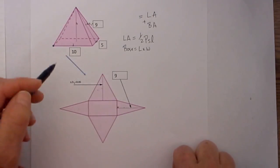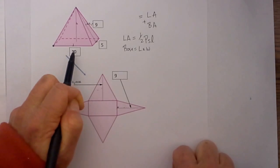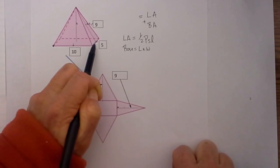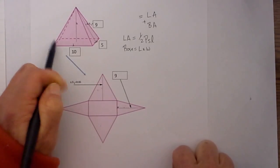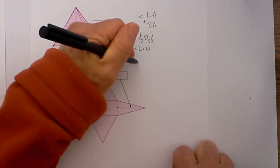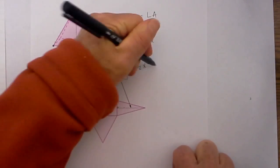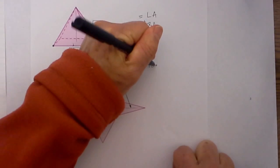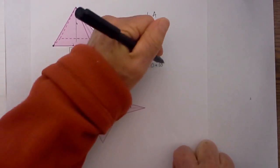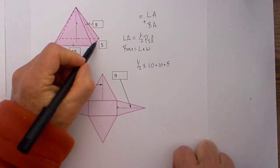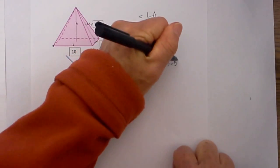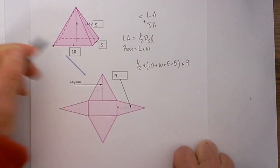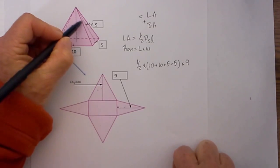Let's first calculate the lateral area. If this side is 10, then the far side is also 10, and if this side is 5, this far side will also be 5. So I am going to take one half times the perimeter — 10 plus 10 plus 5 plus 5 — and then multiply that times the slant length, which is given as 9.